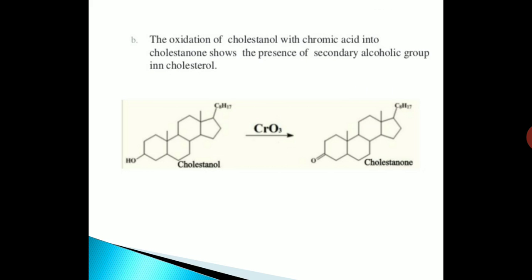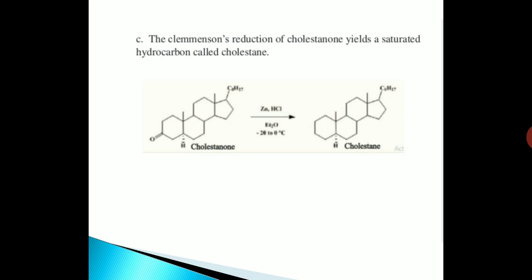The oxidation of cholesterol with chromic acid into cholestenone shows the presence of a secondary alcoholic group in cholesterol. Here we can see the conversion of cholesterol into cholestenone. The Clemmensen reduction of cholestenone yields a saturated hydrocarbon called cholestane.